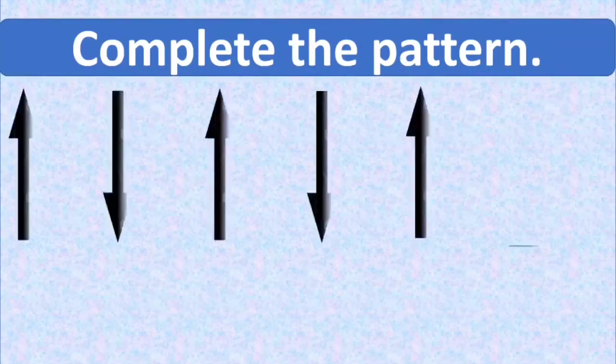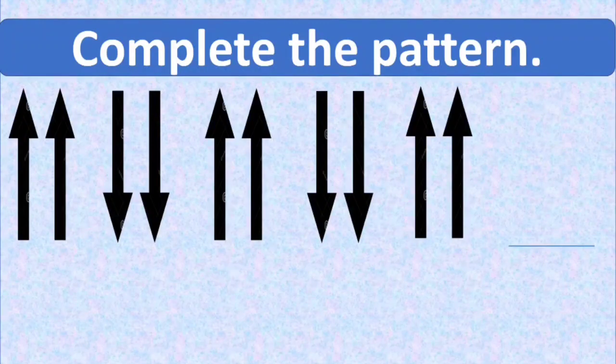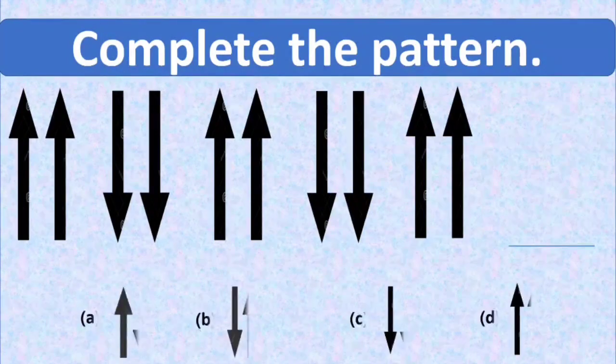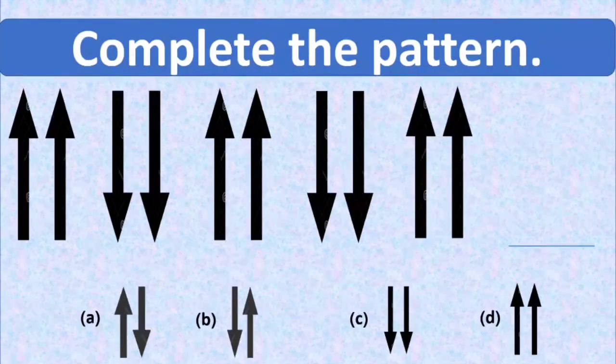Complete the pattern. It is a pattern of some arrows, and these arrows are arranged in upward and downward directions. There is a blank, and to fill in the blank, we have four options. We will select the correct option for this. Look carefully.